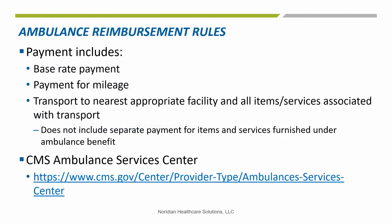Payment under the fee schedule for ambulance services includes a base rate payment plus a separate payment for mileage. It also covers both the transport of the beneficiary to the nearest appropriate facility and all items and services associated with such transport, and does not include a separate payment for items and services furnished under the ambulance benefit. Such items and services include, but are not limited to, oxygen, drugs, extra attendance, and EKG testing, but only when medically necessary and covered by Medicare under the ambulance benefit. For additional information on the fee schedule, providers and suppliers may refer to the Ambulance Service Center on the CMS website.